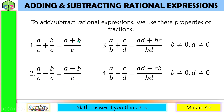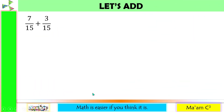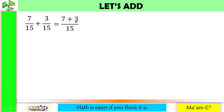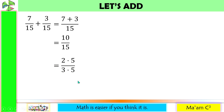Then proceed to the usual addition or subtraction. Let us add: I have here 7 over 15 plus 3 over 15. Notice that our denominators are the same. Let us add our numerators — 7 plus 3 — and copy the denominator. 7 plus 3 is equal to 10. Now, 10 is 2 times 5 while 15 is 3 times 5. By determining the prime factors, we were able to see that there is a common factor we can cancel out, and that is 5. So our final answer is 2 over 3.